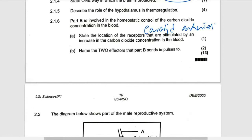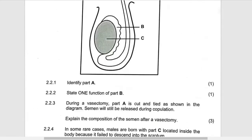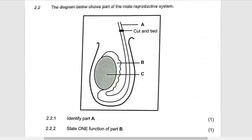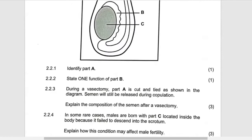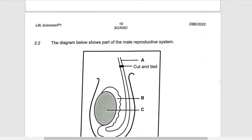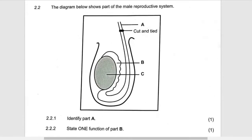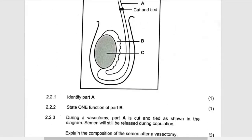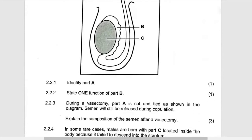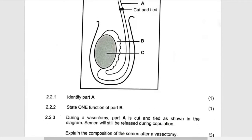Another question is about reproduction, and that is the male. You have A which is vas deferens, B which is epididymis, and C which is testis. Identify A — we have seen it — which is vas deferens.